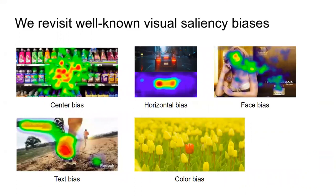Visual saliency is affected by both bottom-up and top-down factors. Bottom-up factors include visual primitives such as color, shape, size, orientation, or motion. Top-down factors include task goals and expectations, and are highly user-dependent. Prior research has reported several replicated effects or biases, which we revisit in this paper.